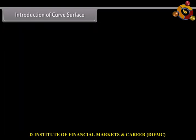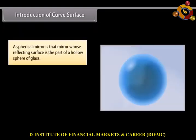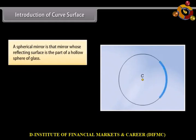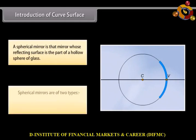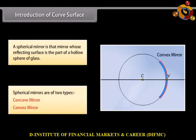A spherical mirror is a mirror whose reflecting surface is the part of a hollow sphere of glass. Spherical mirrors are of two types: concave mirror and convex mirror.